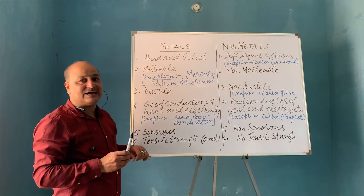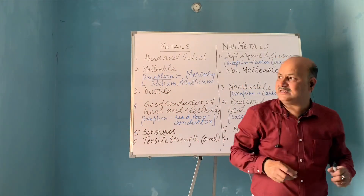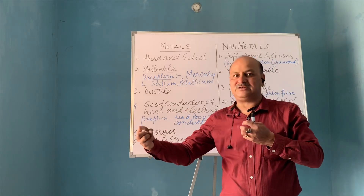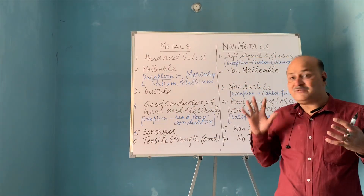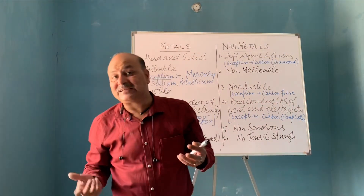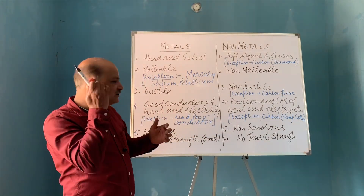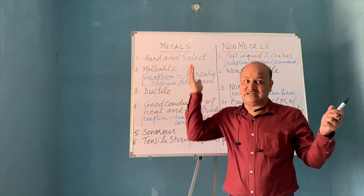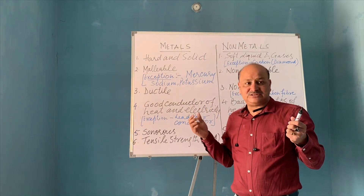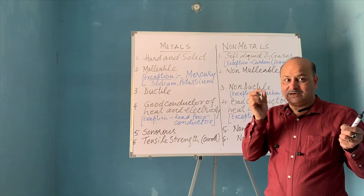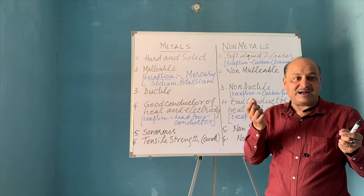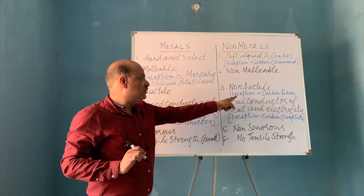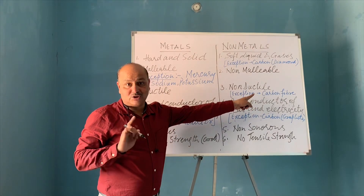The third point is ductility. Ductility is the property through which a metal can be turned into the form of a wire by applying force, stretching, or through machinery. You would have seen chains of gold, silver, and iron, as well as copper wire used in electrical transmission — inside the coloured insulated wires is copper wire. Since copper, a metal, can be turned into wire, it is ductile. Non-metals are non-ductile. Exception: carbon fibers, which are non-metal, are ductile.